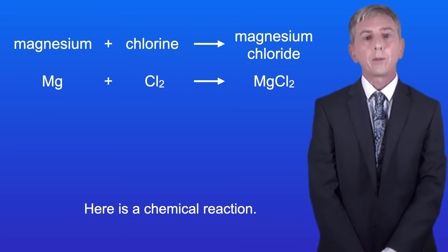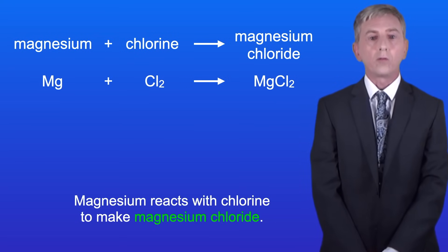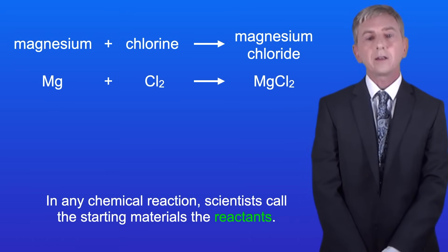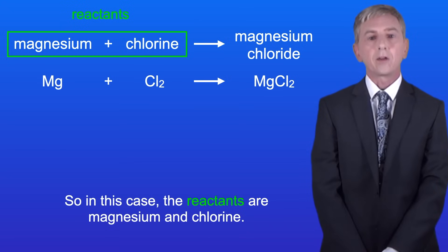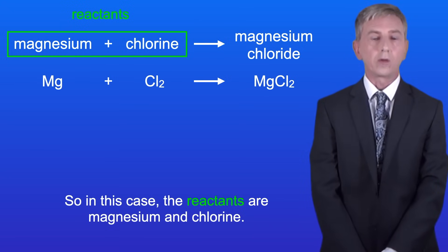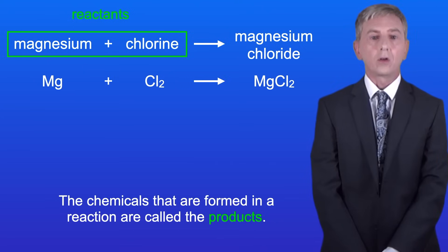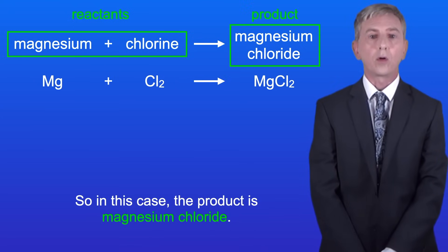Here's a chemical reaction. Magnesium reacts with chlorine to make magnesium chloride. In any chemical reaction scientists call the starting materials the reactants. So in this case the reactants are magnesium and chlorine. The chemicals that are formed in a reaction are called the products. So in this case the product is magnesium chloride.